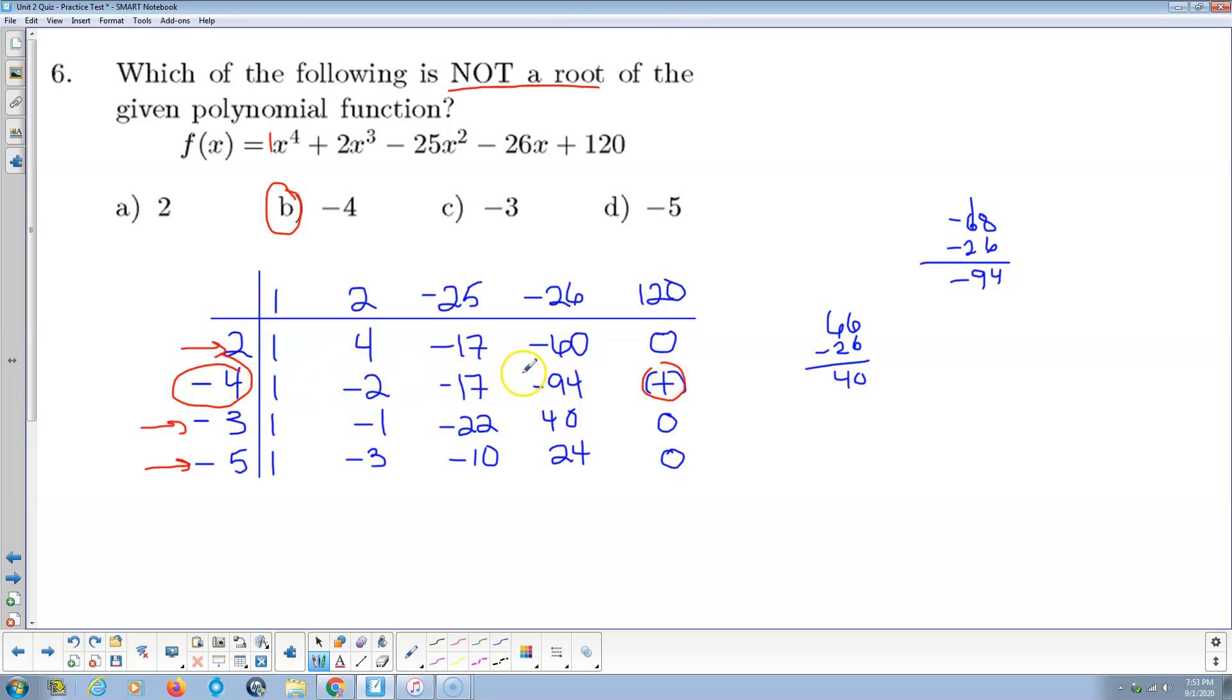Because we're going to go negative 4 times negative 94, that's going to be like pretty close to positive 400. You know, 382 or something like that. 384, I think. And then add another 100, that's a huge positive number. So that's the guy that's not a root. Answer B.